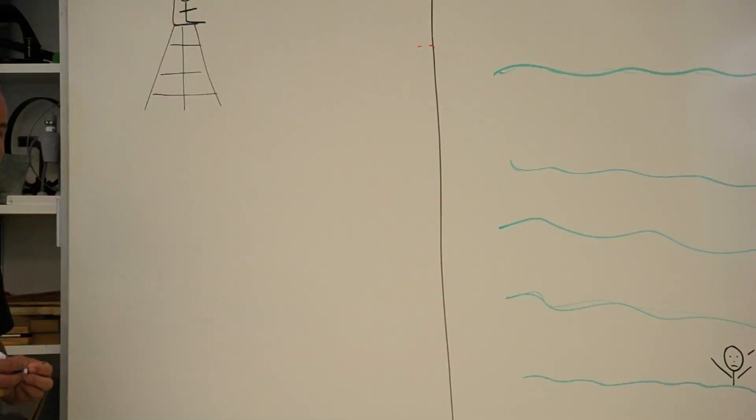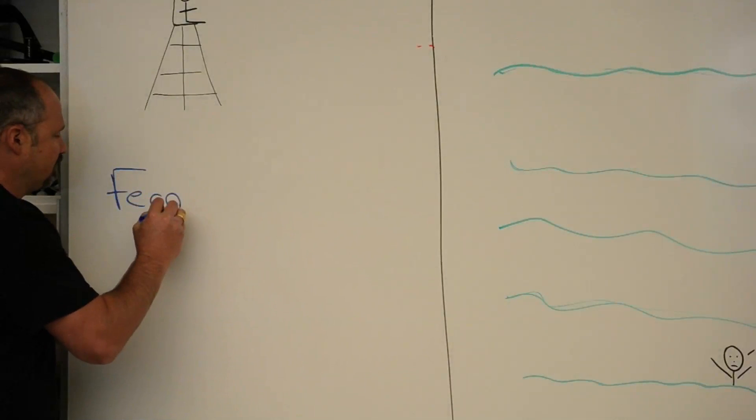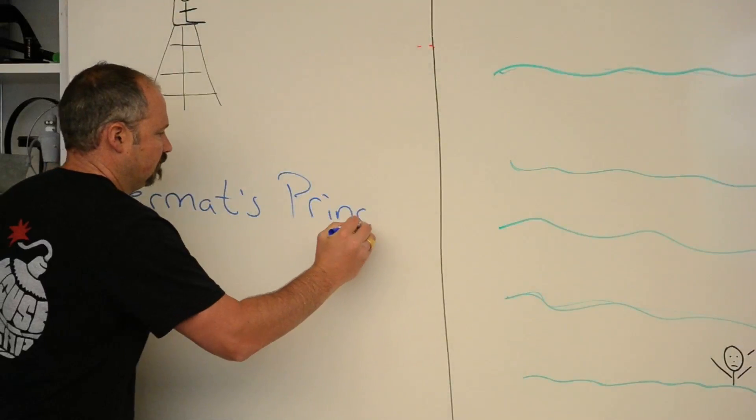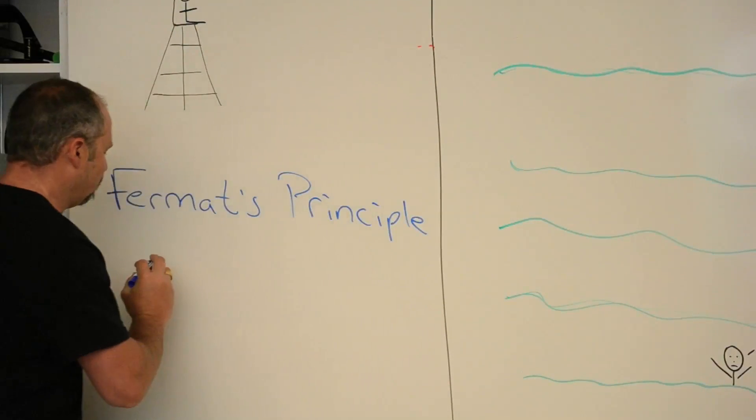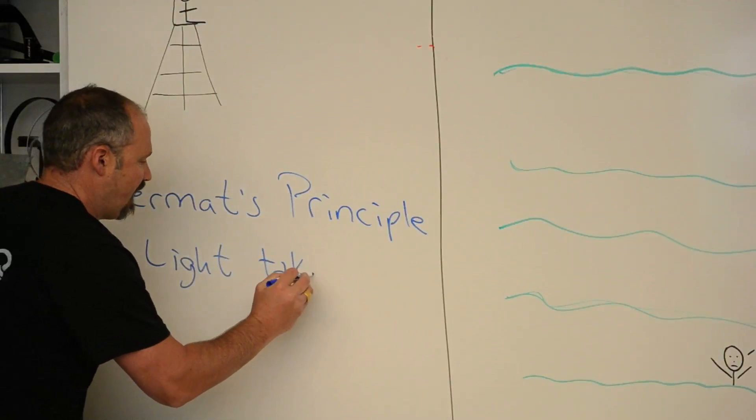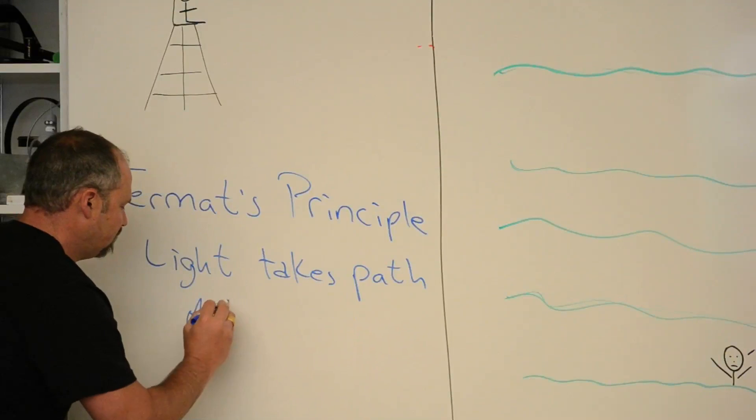Well, it turns out that light behaves the same way. And Fermat's principle tells us that light always takes the path of least time.